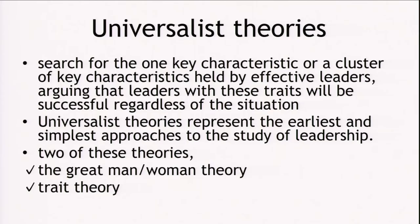There was a search for one key characteristic or a cluster of key characteristics held by effective leaders. The argument was that leaders with these traits will be successful regardless of the situation. Here the emphasis is on either one key characteristic or a cluster of key characteristics. Universalist theories represent the earliest and simplest approaches to the study of leadership. Today we are going to deal with two of these theories: the great man or woman theory and the trait theory.